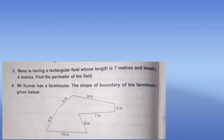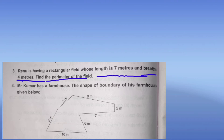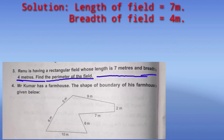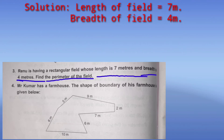Question number 3: Reno has a rectangular field whose length is 7 meters and width is 4 meters. We need to find the perimeter.